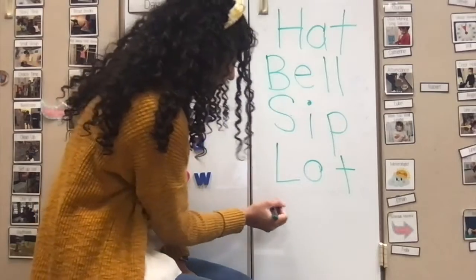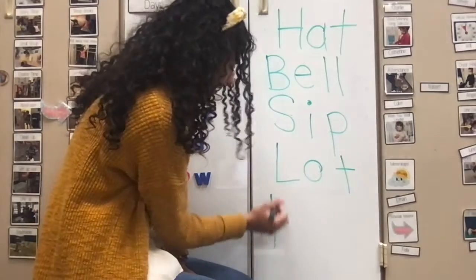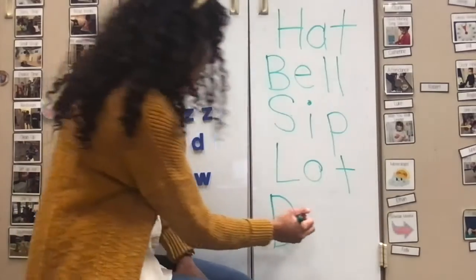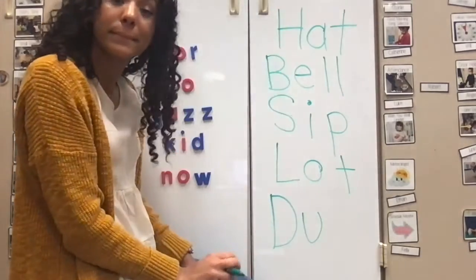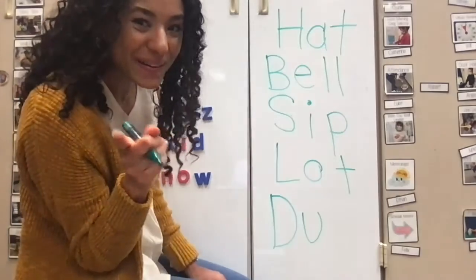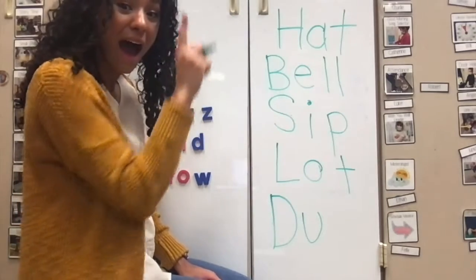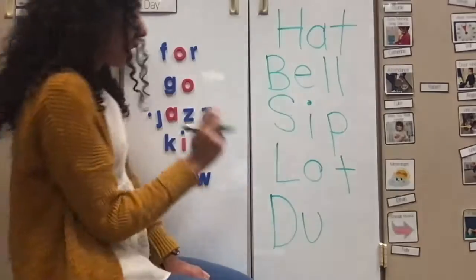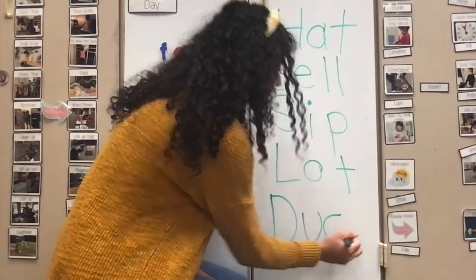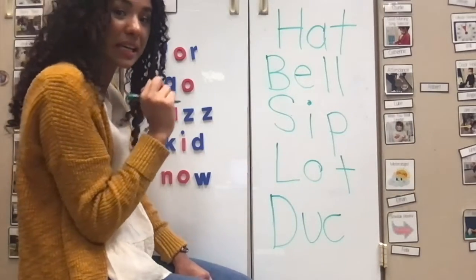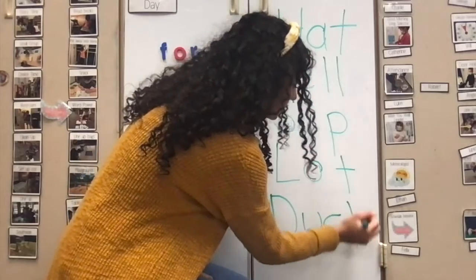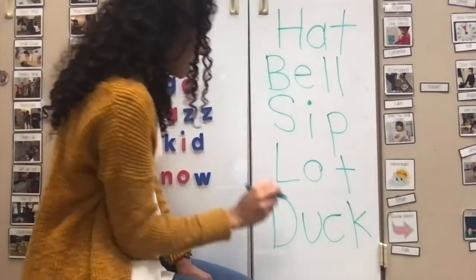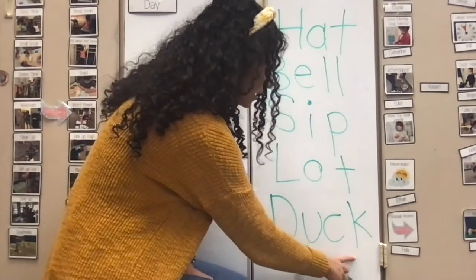All right, now for our last one. What letter is this? D. D-D-D. What letter is this? U. And what sound does it make? U-U-U. Remember — undershirt. U-U-U. All right, what letter is this? C. What sound does it make? K-K-K. What letter is this? K. What sound does it make? K-K-K. D-U-K. Duck.